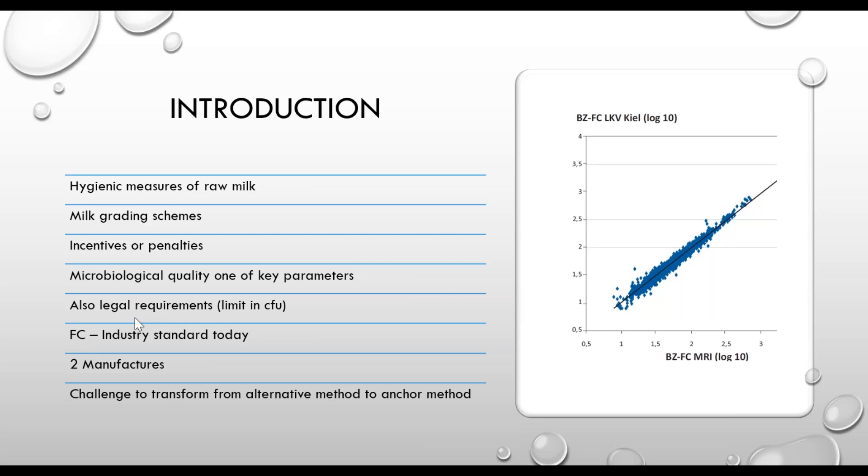That's one of the key components of milk quality. There's also legislative rules that say what is the limit for raw milk in South Africa. Currently in the world, there's only two manufacturers of these flow cytometry instruments. This little graph shows two from different sites in the world, one with one supplier and the other supplier. The correlation is actually quite great. The technology is 20 plus years old already. A lot of work has been done, samples tested. The optimization of equipment even between two different suppliers is really of a high standard. The challenge is to transform this alternative method to the anchor or reference method.